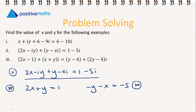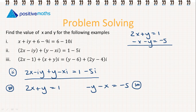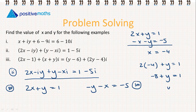We can't solve these separately — we have two equations and two variables. So we need to solve simultaneously. We have 2x plus y equals 1 and minus x minus y equals minus 5. Adding the equations, the y's cancel: 2x minus x gives x, and 1 plus minus 5 gives minus 4, so x equals minus 4. Substituting back into the first equation: minus 8 plus y equals 1, therefore y equals 9. So x equals minus 4 and y equals 9.